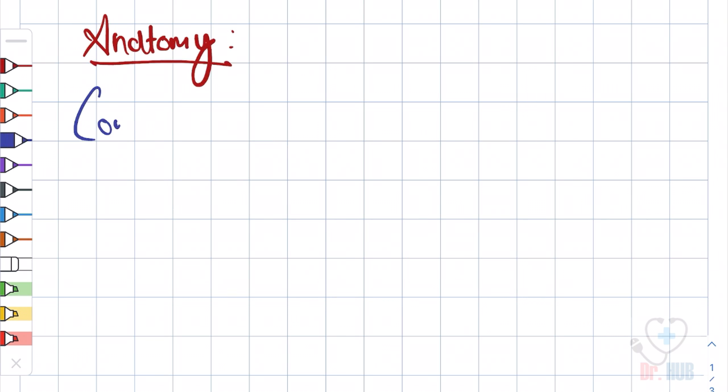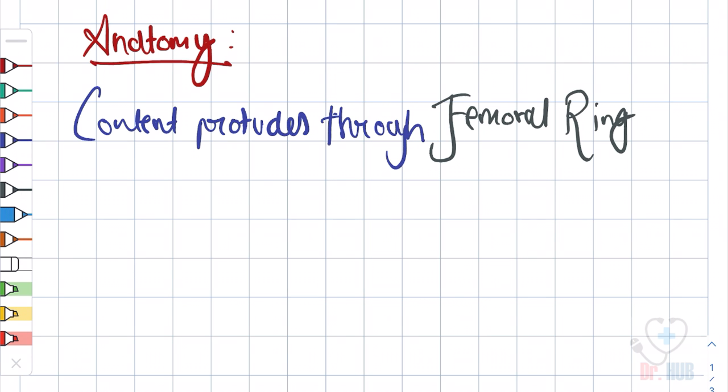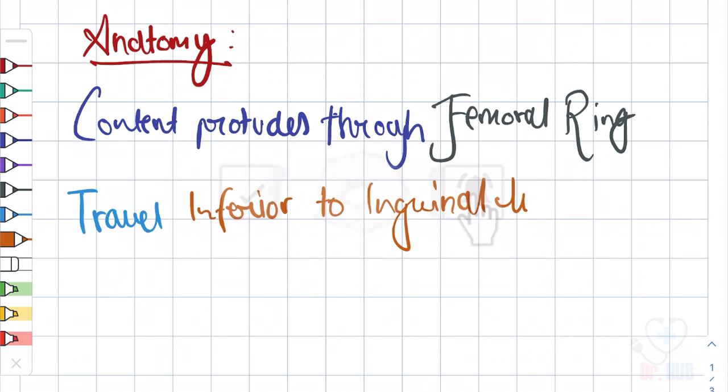Anatomy: the content protrudes through the femoral ring and travels inferior to the inguinal ligament.